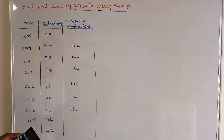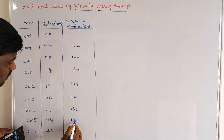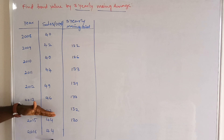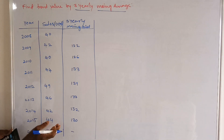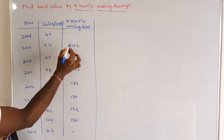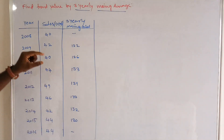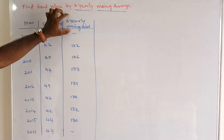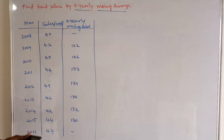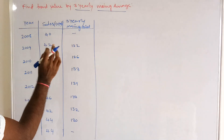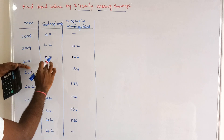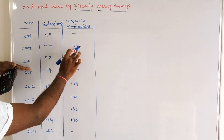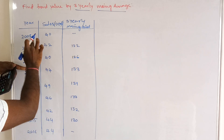Continuing: 42, 44, 44 gives 130. Then we check whether there is another year — there is not, so we calculate only up to the last available year. We now have the complete column of three-yearly moving totals. Each total represents the sum of three consecutive years placed against the middle year of that group.